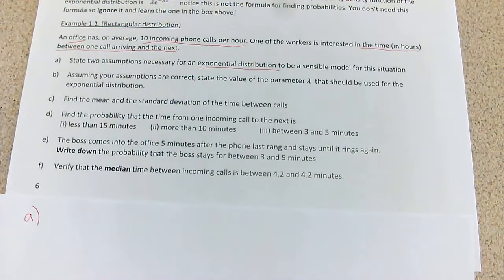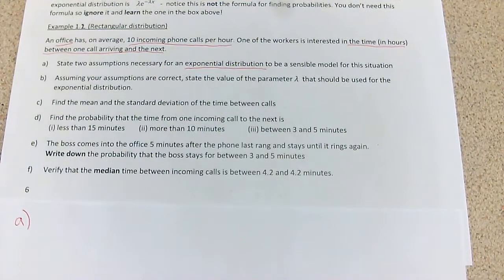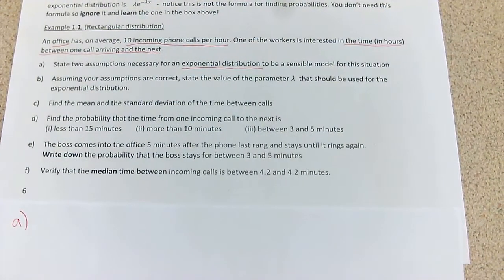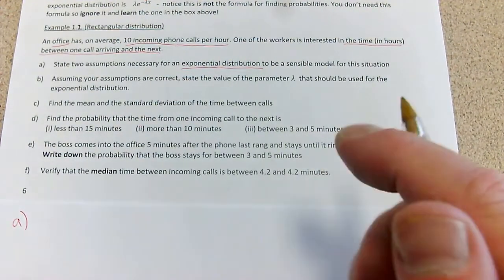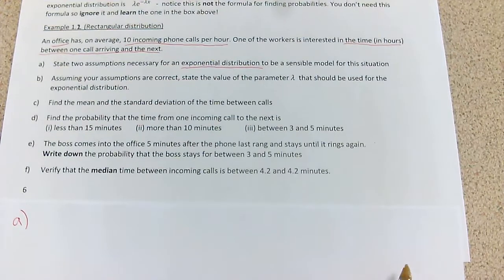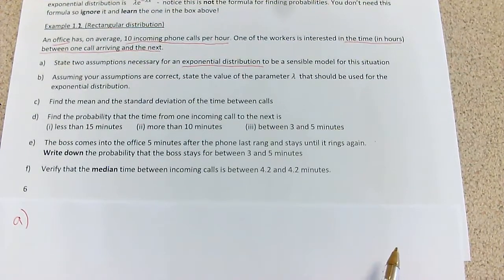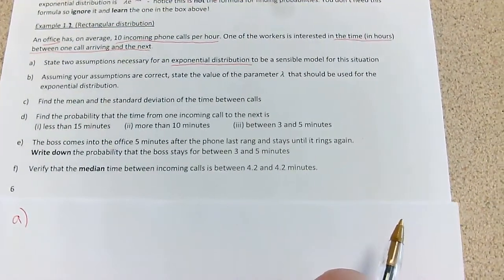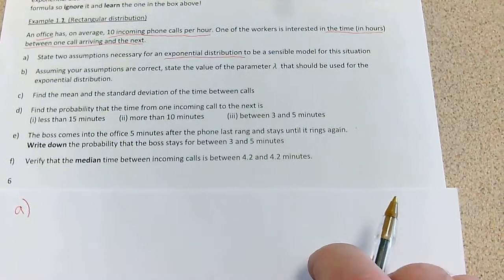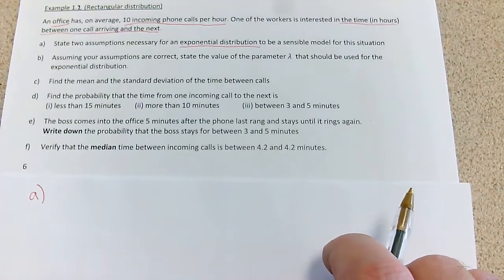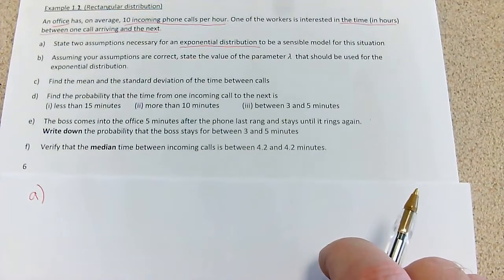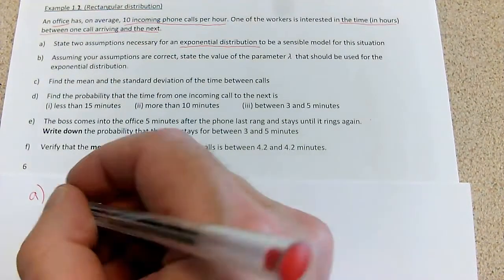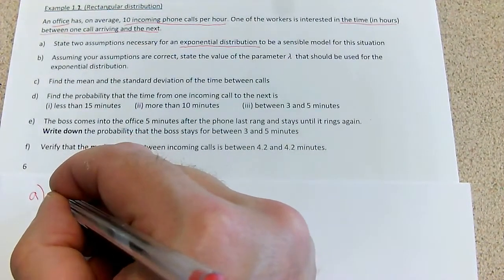The exponential distribution applies when we are waiting for the first occurrence, or the next occurrence, of something where the events are occurring independently and at a constant average rate, as with a Poisson distribution. So that's my two assumptions.